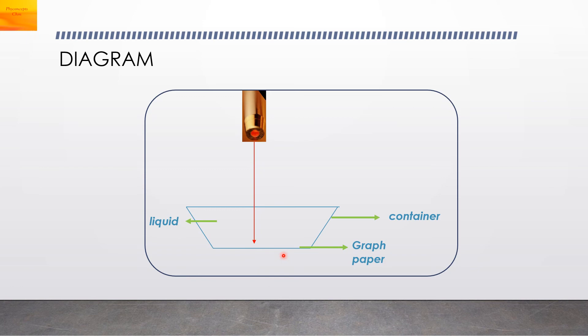This is the construction: we have a container, and at the bottom of the container we stick a graph paper. We pour water into the container, and on top we fix the laser pointer at a proper height.